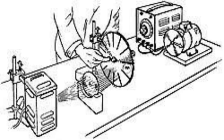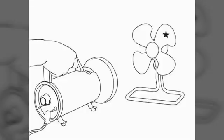A stroboscope is an instrument for studying periodic motion or determining the speed of rotation by shining a bright light at intervals so that the moving or rotating object appears stationary. We can see this in the picture on screen.